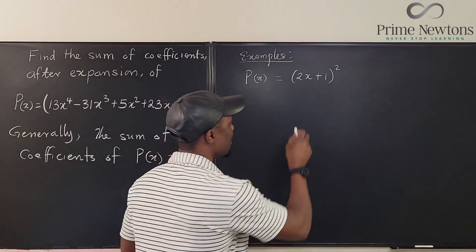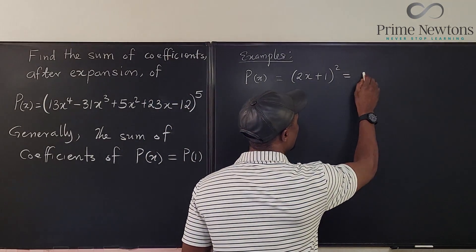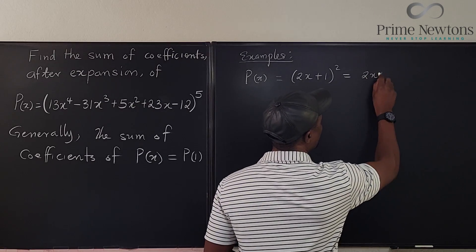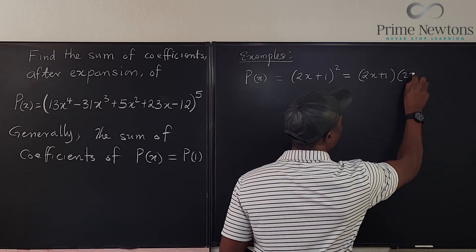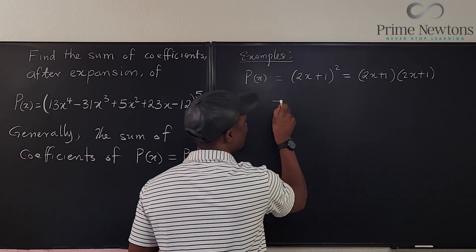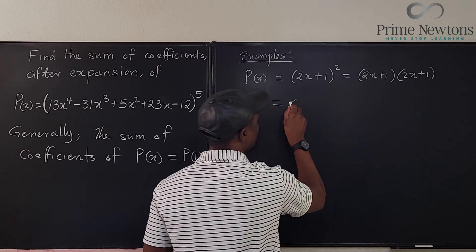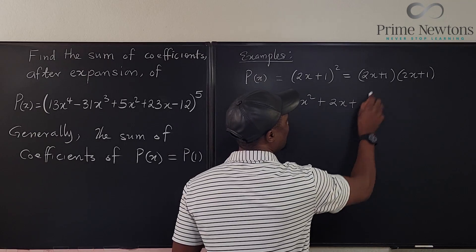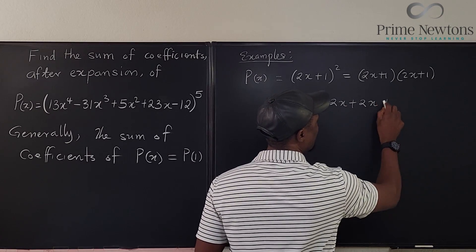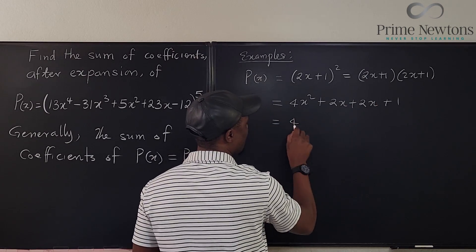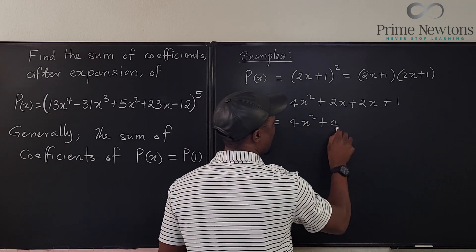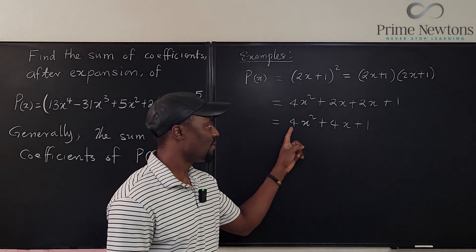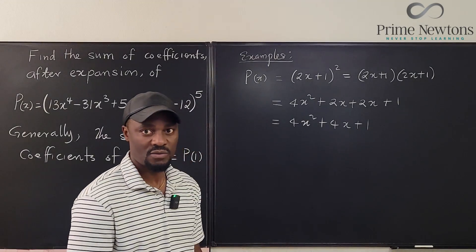Remember, if you square this, let's write 2X plus one times 2X plus one. So you end up with, this is going to be 4X squared plus 2X plus 2X plus one times one is one. So we end up with 4X squared plus 4X plus one. What is the sum of the coefficients? It's four plus four plus one. That gives you nine, right?